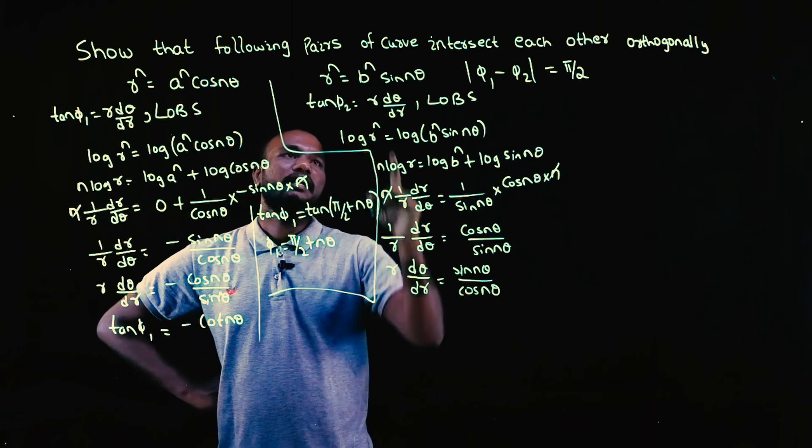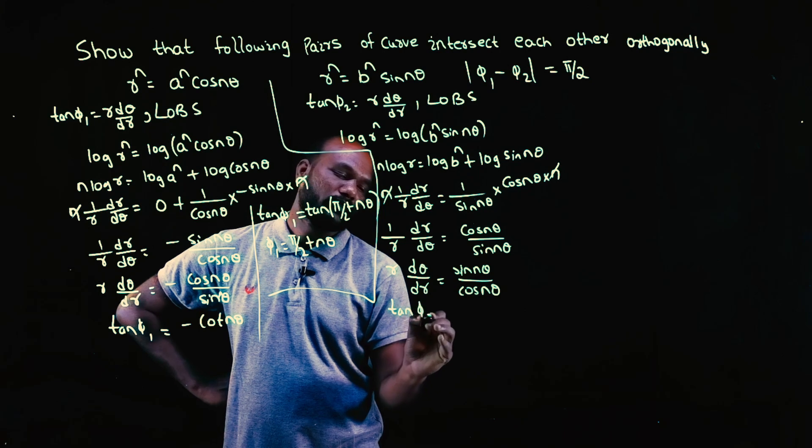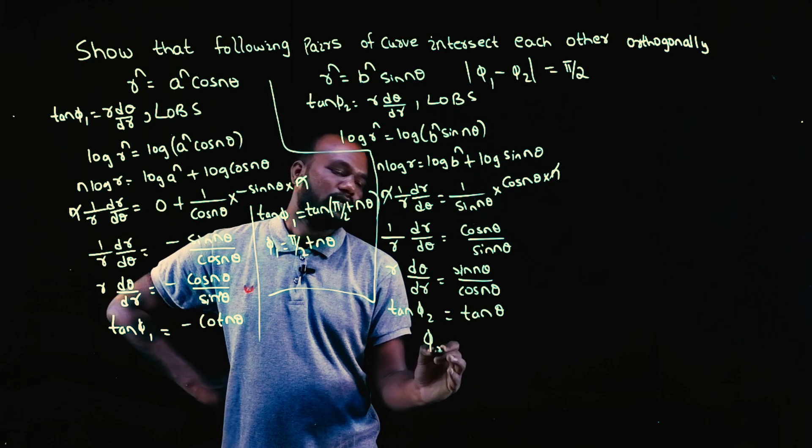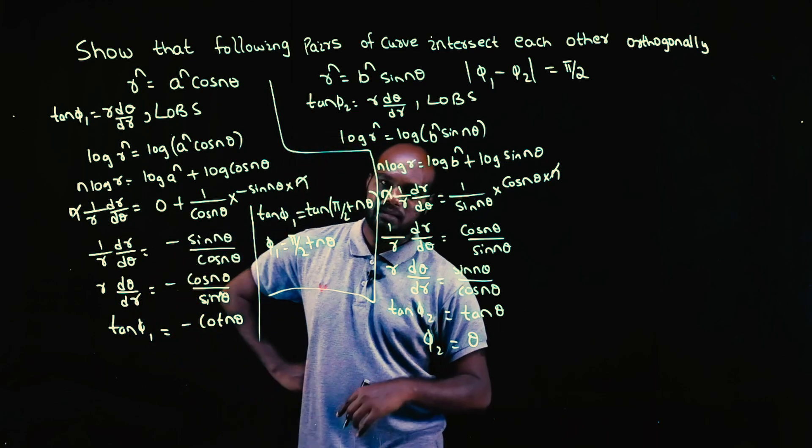I want r in the numerator, so just flip it. R, d theta by dr, sin will go up, cos will come down. So r into d theta by dr is tan phi 2. Sin theta by cos theta is tan theta. So phi 2 is equal to n theta.